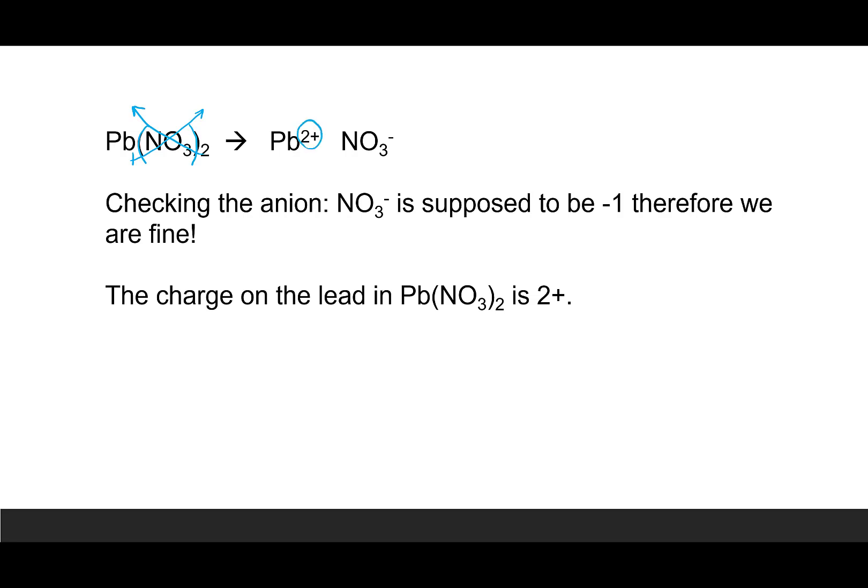NO3 now has a one minus charge. It's important to distinguish the three that applies to there being three oxygen atoms, and then the whole thing has a negative charge. When we look at this polyatomic ion on the list, NO3 is supposed to have a negative one charge, so we're fine. The lead has a 2+ charge.